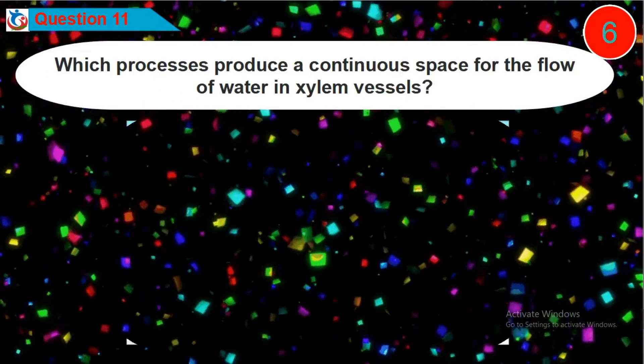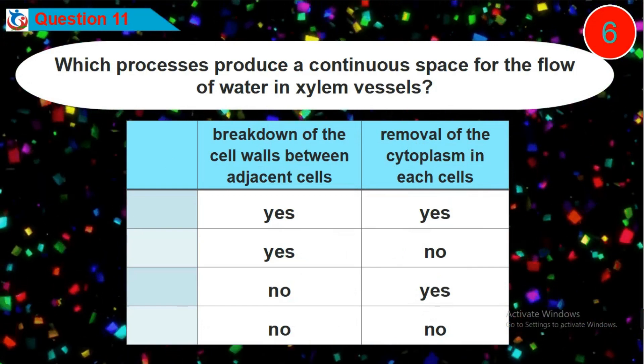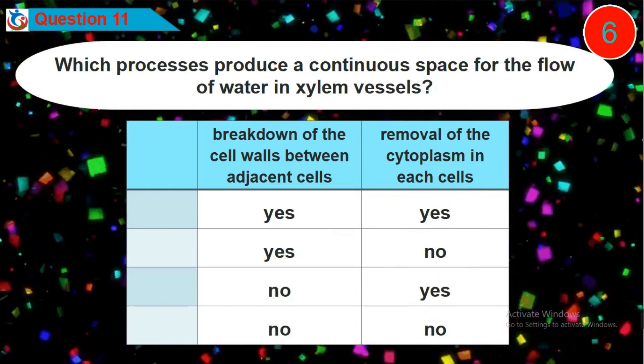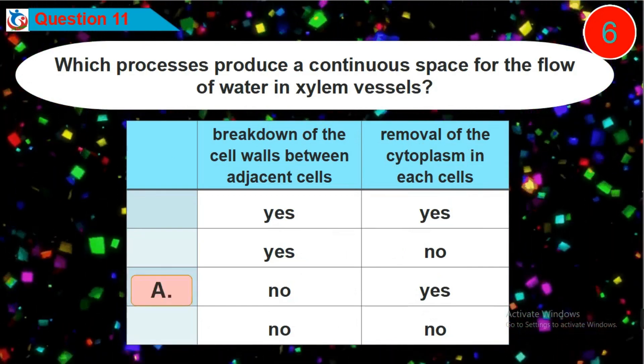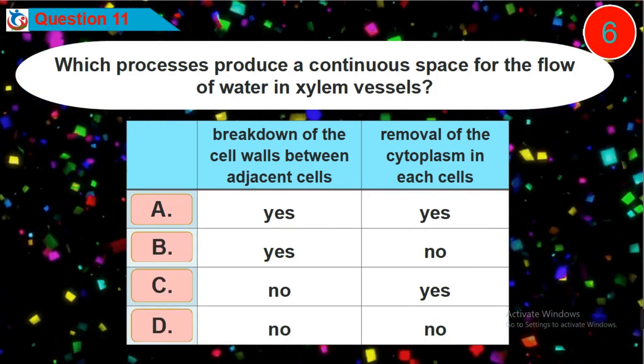Question 11. Which processes produce a continuous space for the flow of water in xylem vessels? Is it option A, B, C or D?